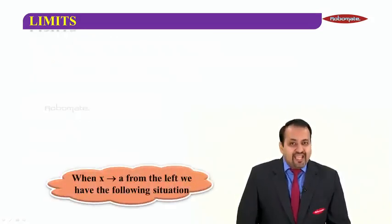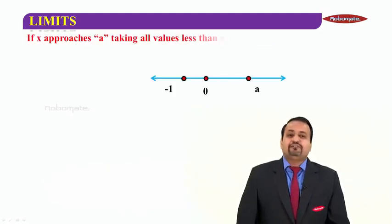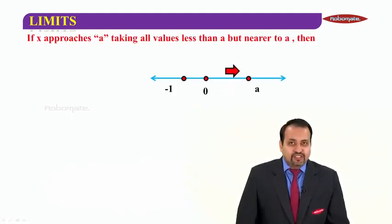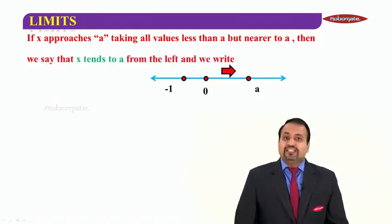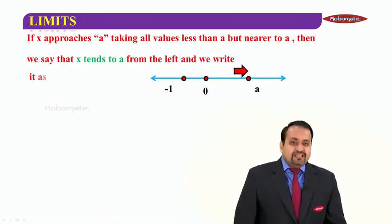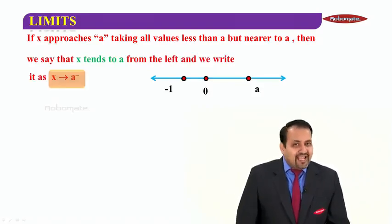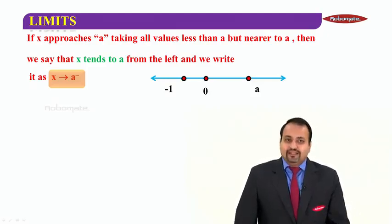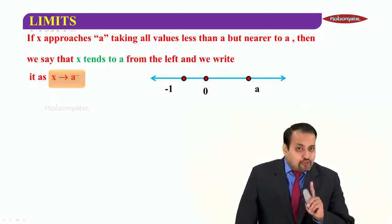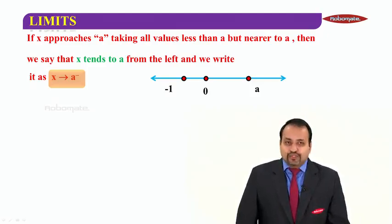Now, when X tends to A from the left, we have the following situation. If X approaches A, taking all values less than A, but nearer to A, then we say that X tends to A from the left. We write this as X tends to A and we put a small minus over A. This minus is not to be used in any of the calculation.